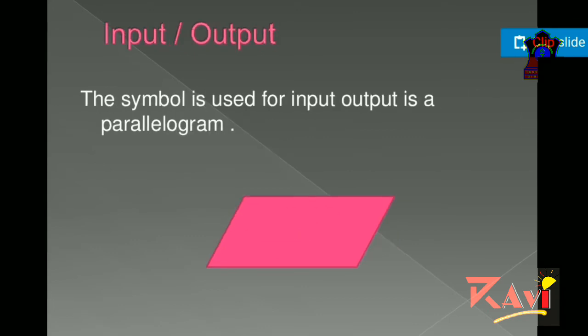Second is input or output box. The symbol used for input output is a parallelogram. This symbol is a parallelogram where the two opposite sides are equal.